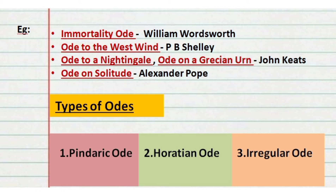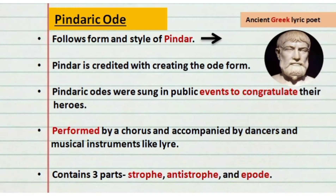Mainly there are three types of odes: Pindaric Ode, Horatian Ode, and Irregular Ode. The Pindaric Ode follows the form and style of the Greek lyric poet Pindar, who is also considered to be the one who created this form of poetry. As discussed in the origin of odes, Pindaric Odes were sung in public events to congratulate heroes, and these were performed by a chorus accompanied by dancers and musical instruments like the lyre.